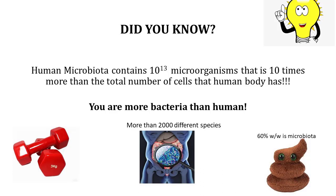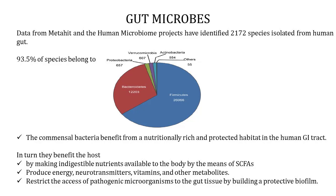If you take out all the microorganisms from your gut and weigh them, it will weigh around 3 kilos. There are more than 2000 species of microorganisms in your gut, and 60% of your stool weight is contributed by your gut microorganisms. Data from MetaHIT and the Human Microbiome Projects have identified 2172 species isolated from the human gut, and 93.5% of these species belong to Firmicutes Phyla. These commensal microbes are happily living in our gut as they get really good nutrition, and moreover, our GIT is like a protected habitat for them.